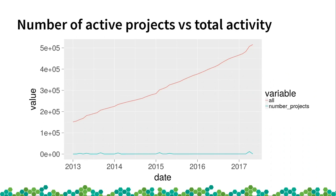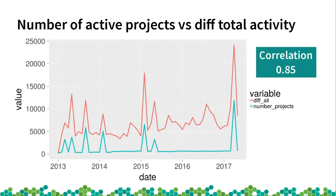I wanted to show it properly, so I derived the function. Here you can see that every time there is a peak, there is a peak in the other one. I calculated the correlation and it's really high — 0.85. So maybe it's not the only reason, but at least it's the most important reason why our collaboration activity increases: it's the number of projects, and not just the biggest projects. I found that quite curious.